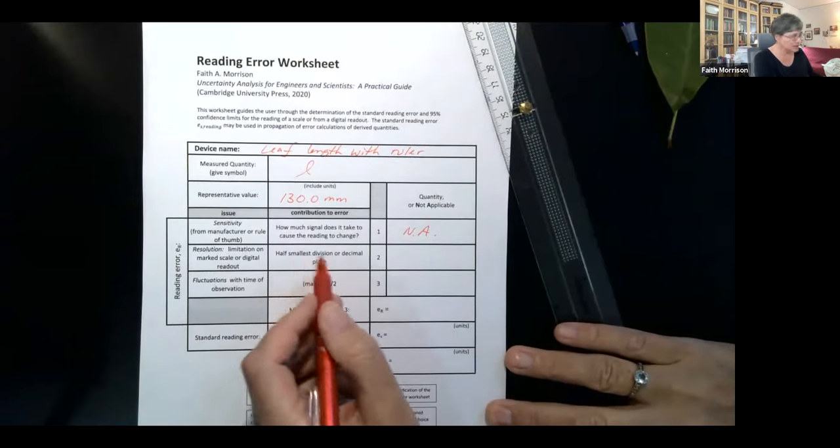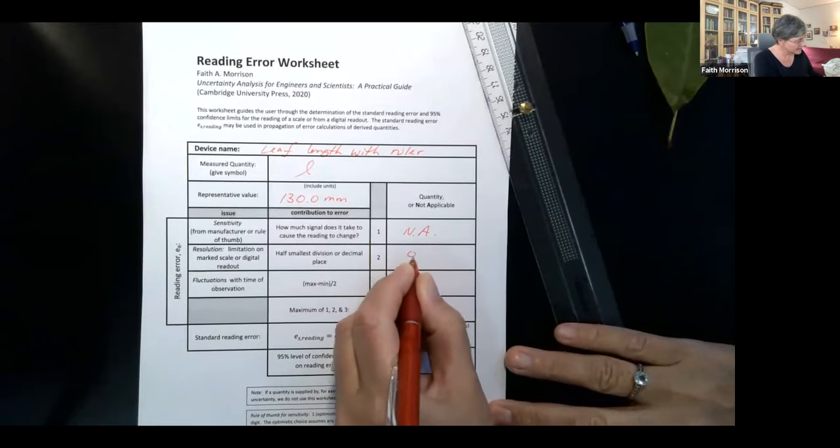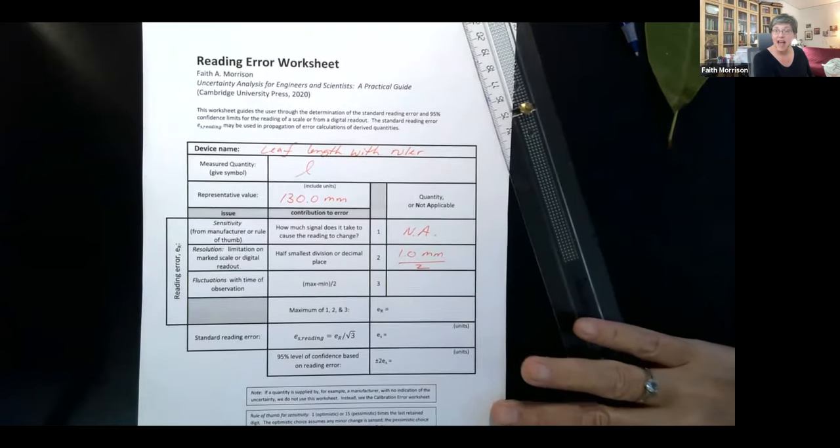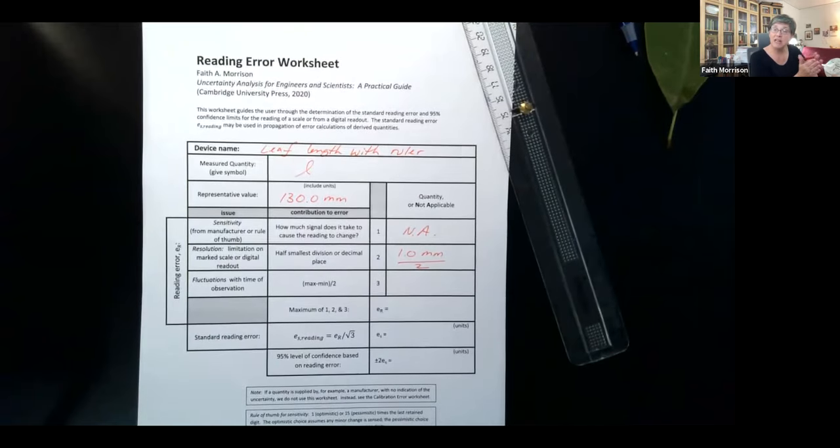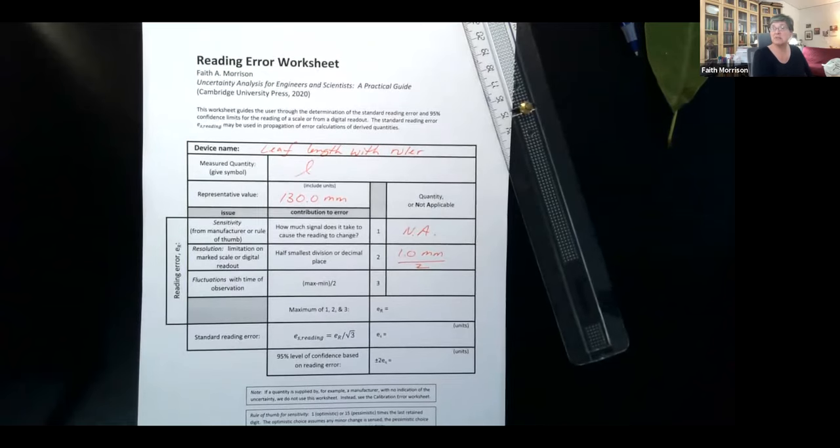There's a second one, which is resolution, which is very straightforward. So on this device, there's a smallest division. So the smallest division is one millimeter and half of that is half the smallest division. So that's a standardized definition of resolution is how resolved is something like the scale on the measurement. So that one's really pretty easy.